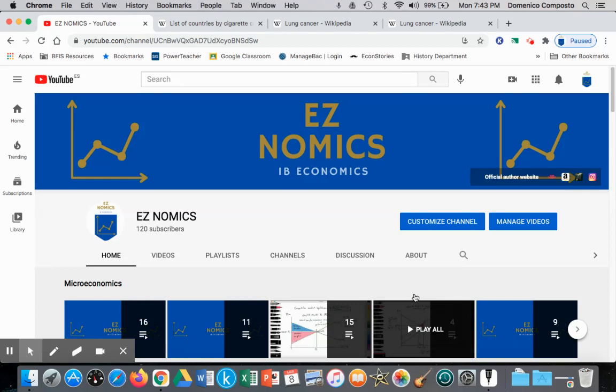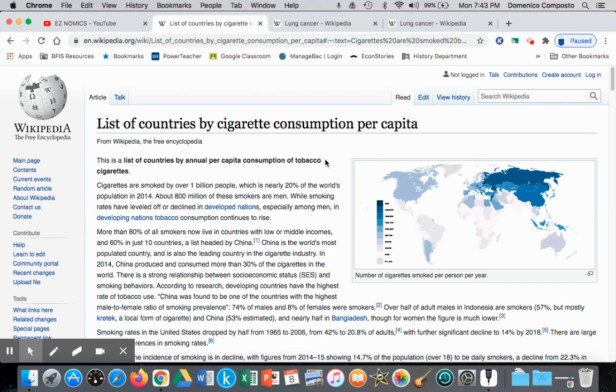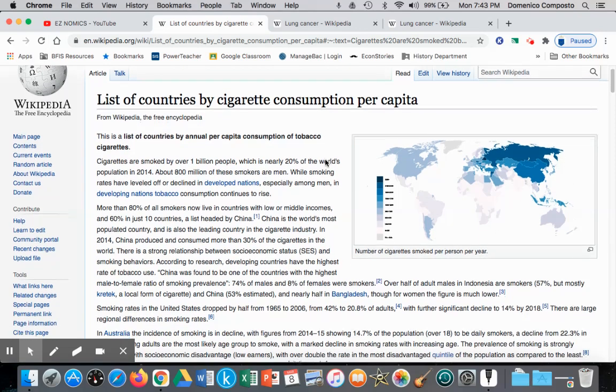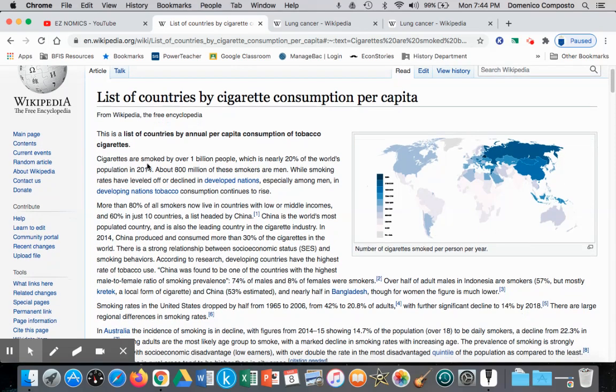And there are a variety of examples, perhaps consuming or use of your gasoline car that emits carbon, excessive use of alcohol, we're going to use the example of cigarettes. A little bit of some background information about cigarette consumption. Cigarettes are smoked by over 1 billion people. That's about one out of every seven people on the planet, there's just over 7 billion people on the planet.